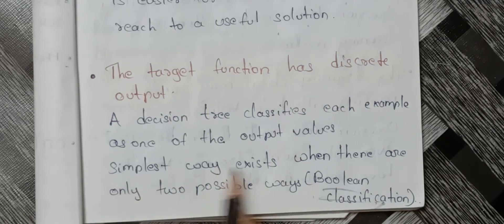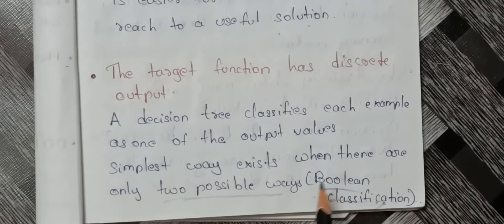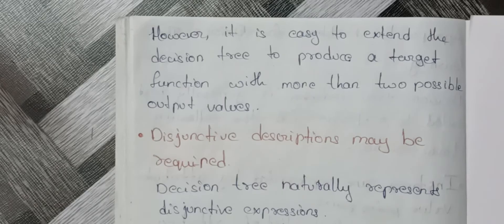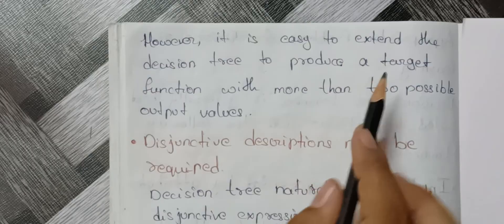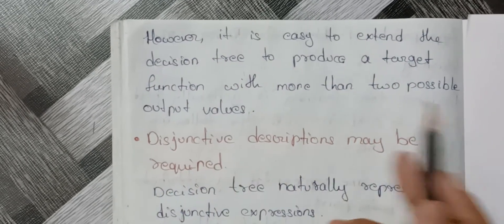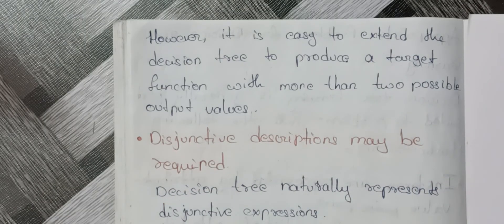The simplest way is when there are only two possible output values. Boolean classification is easy and best suited for decision trees. However, it is easy to extend a decision tree to produce a target function with more than two possible output values if needed.